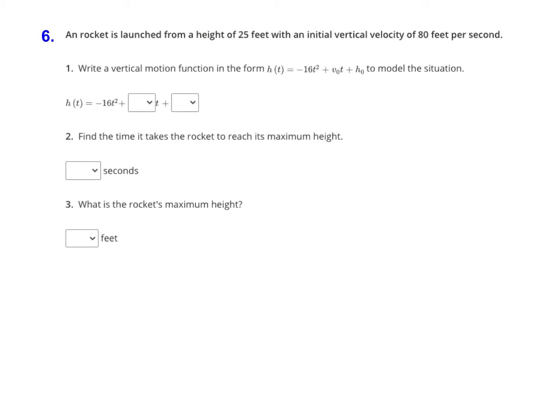A rocket is launched from a height of 25 feet with an initial vertical velocity of 80 feet per second. The first part of the question says to write a vertical motion function in the form h(t) equals negative 16t squared plus v sub zero t plus h sub zero to model the situation.